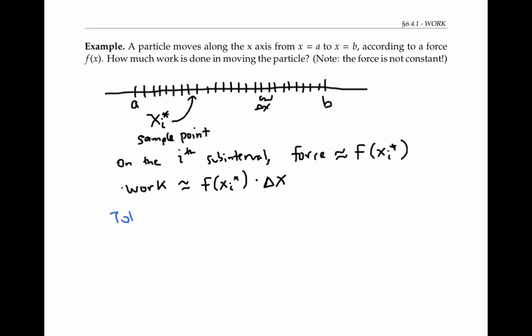So the total work done is going to be the sum from i equals one to n, where n is the number of sub intervals, of the work done on each sub interval, which is f of x sub i star times distance delta x. I should say this is approximately the total work. In order to get the actual total work, we'll need to take a limit as we use more and more skinnier and skinnier sub intervals. So the limit as n goes to infinity of this Riemann sum.